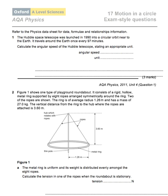This is a walkthrough of the Chapter 17 Motion in a Circle test. Question 1 says the Hubble Space Telescope was launched in 1990 into a circular orbit near to the Earth. It travels around the Earth once every 97 minutes. Calculate the angular speed of the Hubble Telescope.